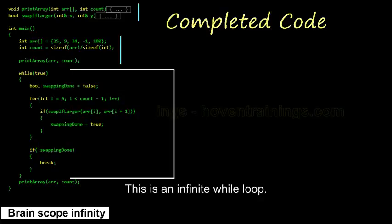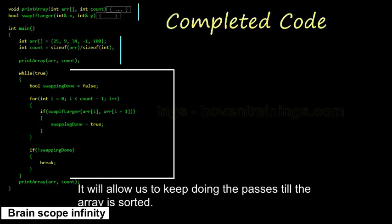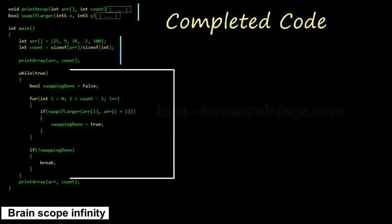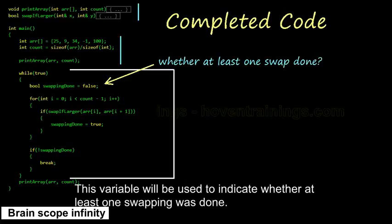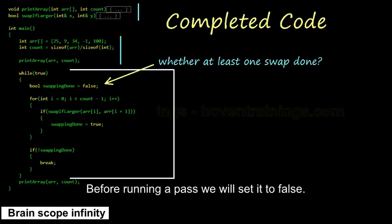This is an infinite while loop. It will allow us to keep doing the passes till the array is sorted. This variable will be used to indicate whether at least one swapping was done. Before running a pass we will set it to false.